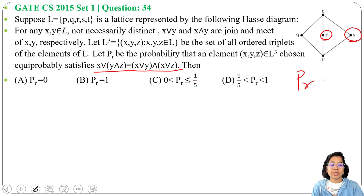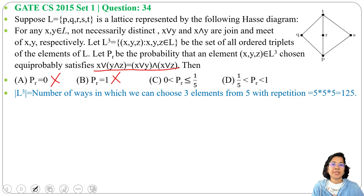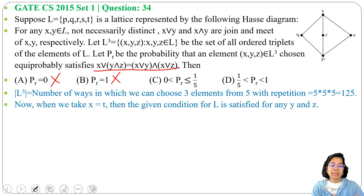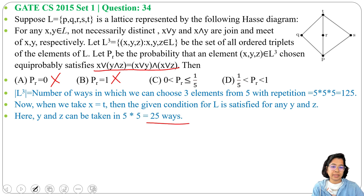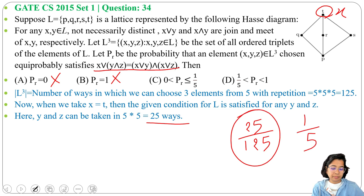Since it's not a distributive lattice, not all elements will satisfy the distributive property, so probability ≠ 1. Also, probability ≠ 0 because for some elements it will satisfy. The total number of ways to choose three elements from five with repetition is 5 × 5 × 5 = 125. Now suppose x = t; then y and z can be any two elements from {p, q, r, s, t}, giving 5 × 5 = 25 ways. When x = t, all these will satisfy the distributive property, so probability is at least 25/125 = 1/5.